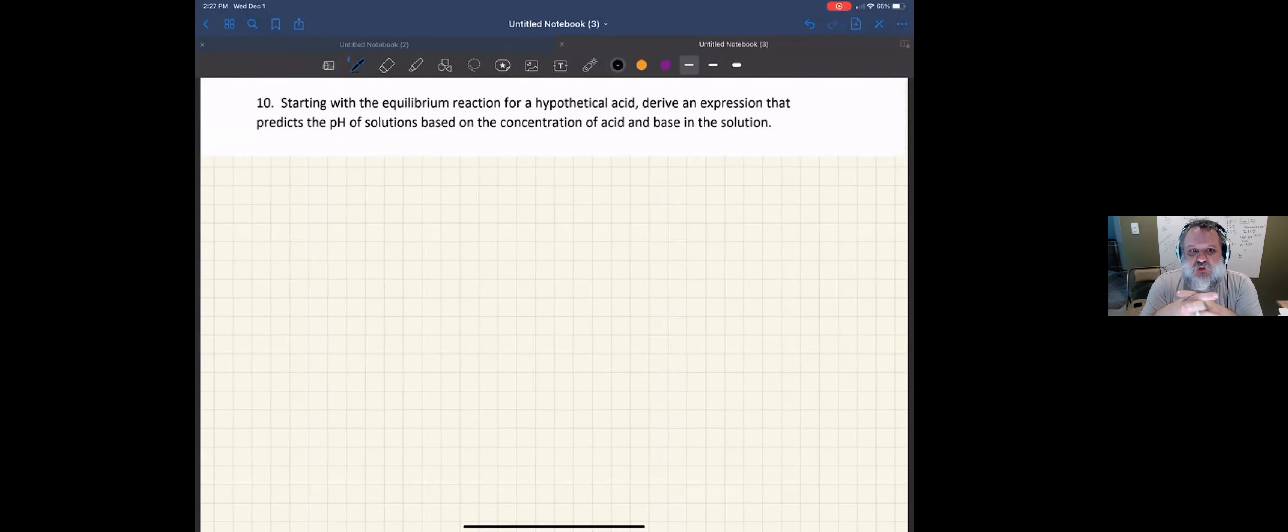All right, it says, starting with the equilibrium reaction for any hypothetical acid, derive an expression that predicts the pH of solutions based on the concentration of acid and base in the solution.